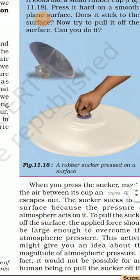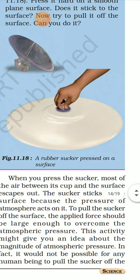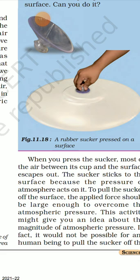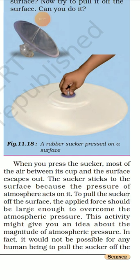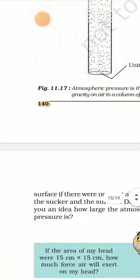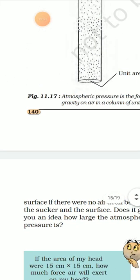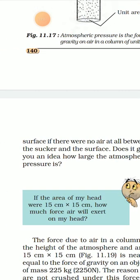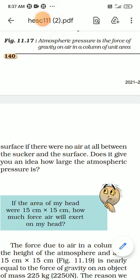When you press the sucker, most of the air between the cup and the surface escapes out. The sucker sticks to the surface because the pressure of the atmosphere acts on it. To pull the sucker off the surface, the applied force should be large enough to overcome the atmospheric pressure. This activity gives you an idea how large the atmospheric pressure is. In fact, if there were no air at all between the sucker and the surface, it would not be possible for any human being to pull it off.